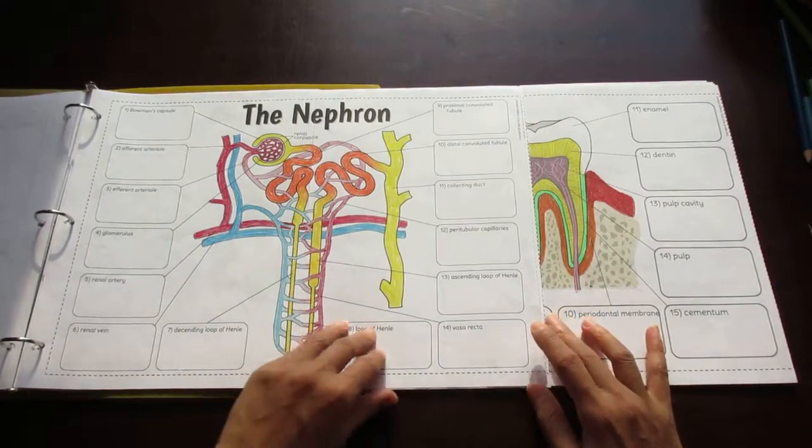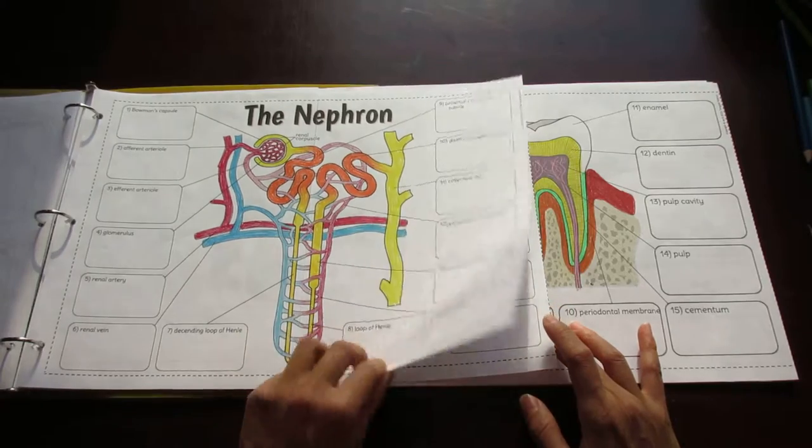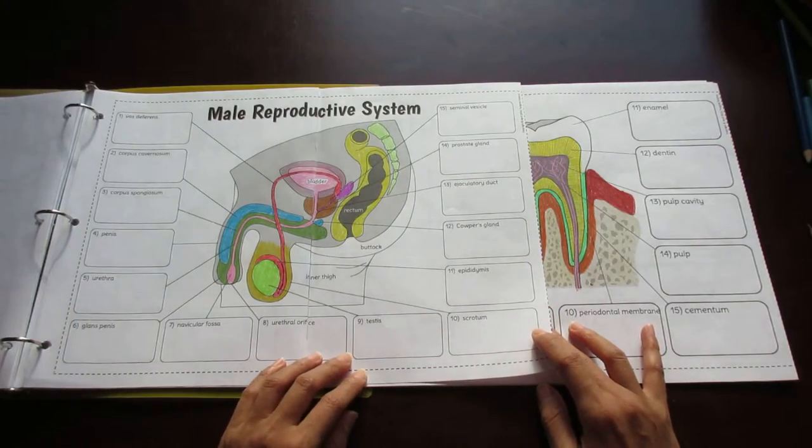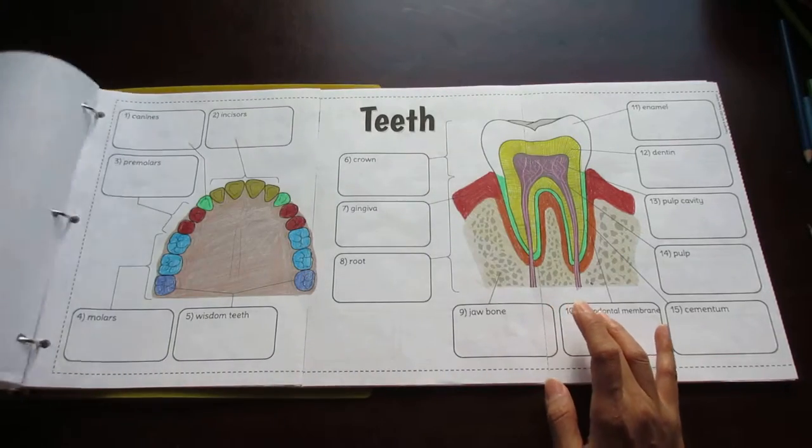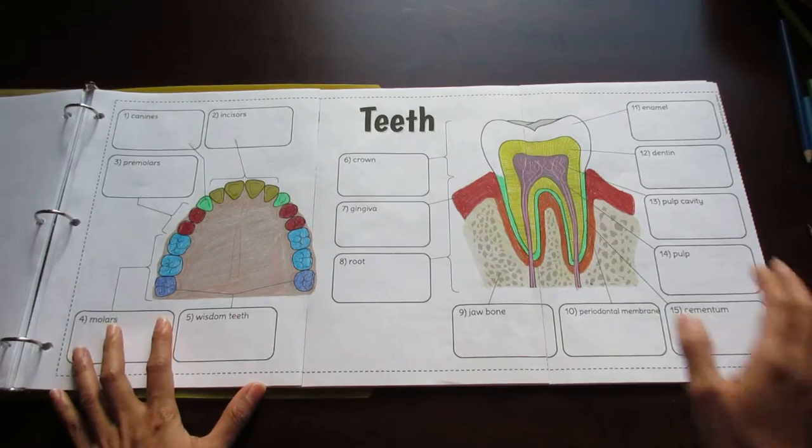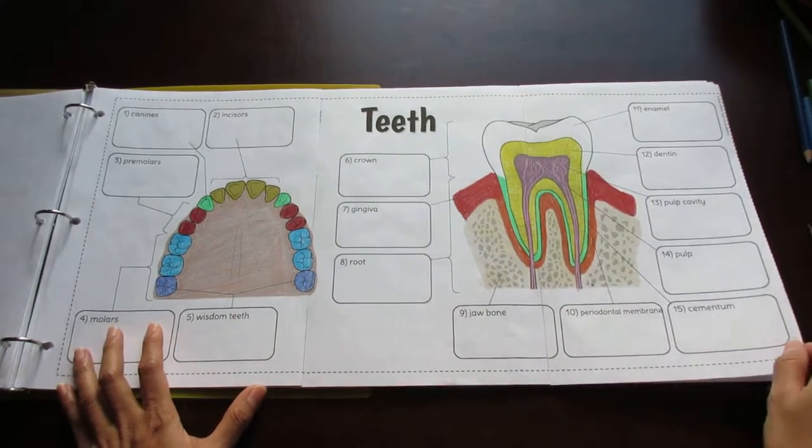Then there's the nephron. There's the male reproductive system. Now we get into some horizontal three-pages. So here's teeth with the different types of teeth on this side and then the tooth anatomy over there.